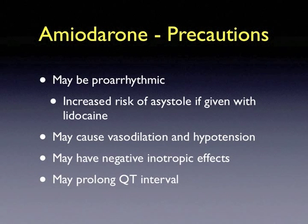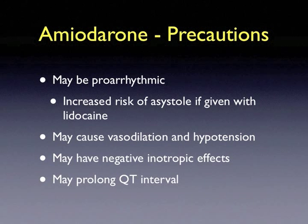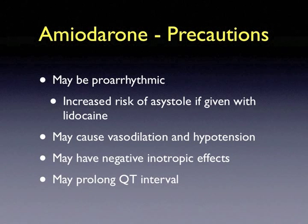Amiodarone's precautions include that it may be pro-rhythmic, like any other antiarrhythmic. Be cautious if lidocaine has been given, as giving amiodarone in this setting increases the risk of asystole. Amiodarone may also cause profound vasodilation and hypotension; thus, giving a first dose of a pressor prior to administration is a good idea in a pulseless arrest state. Amiodarone may have negative inotropic effects as well — again the rationale for pressor administration prior to amiodarone use. Amiodarone, like many other antiarrhythmics, may prolong the QT interval.